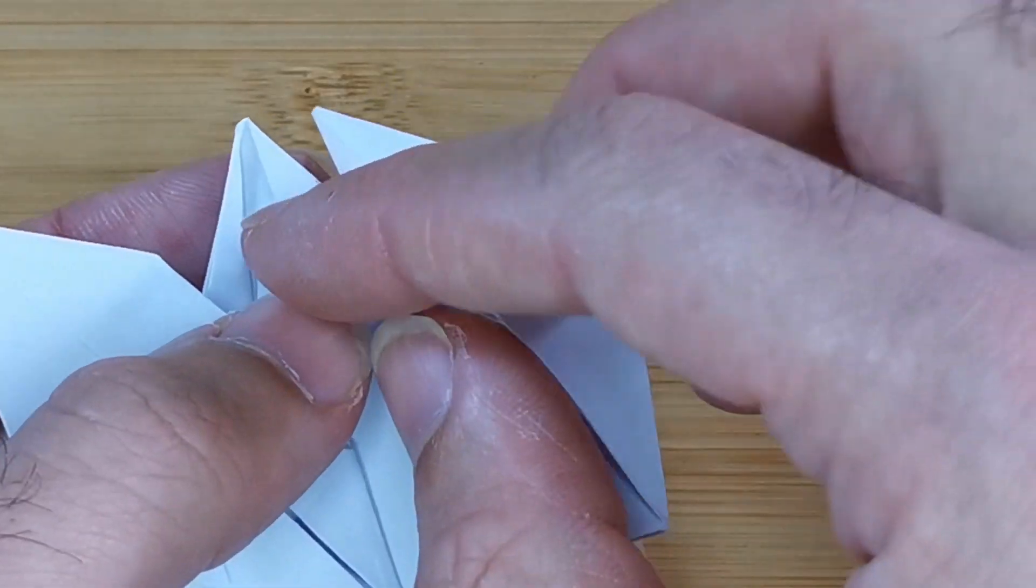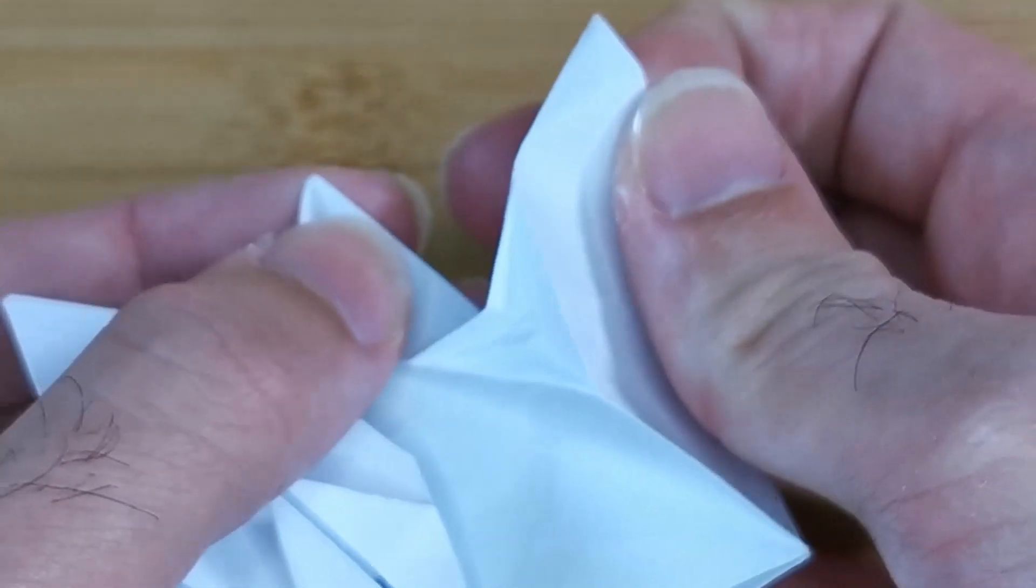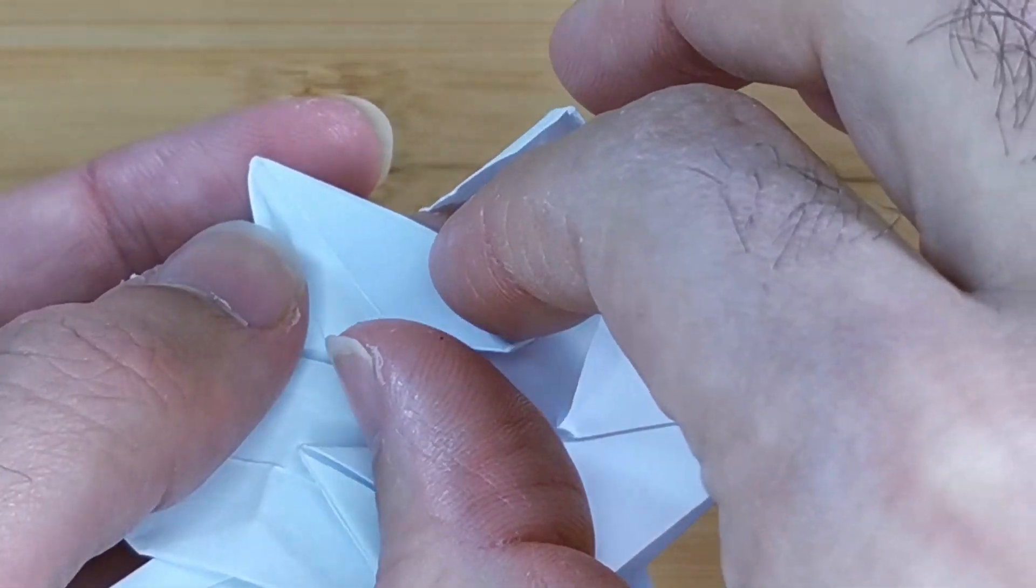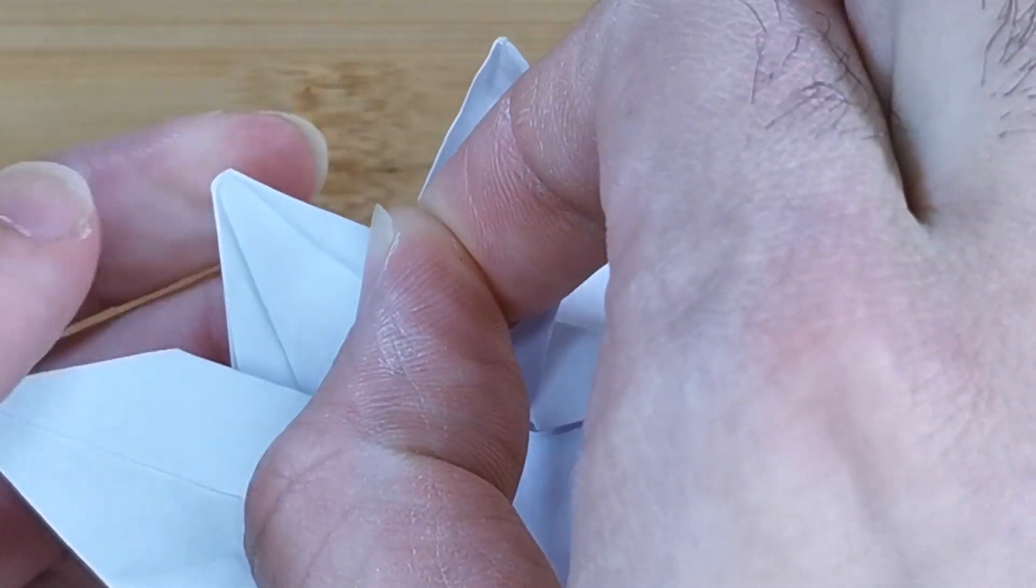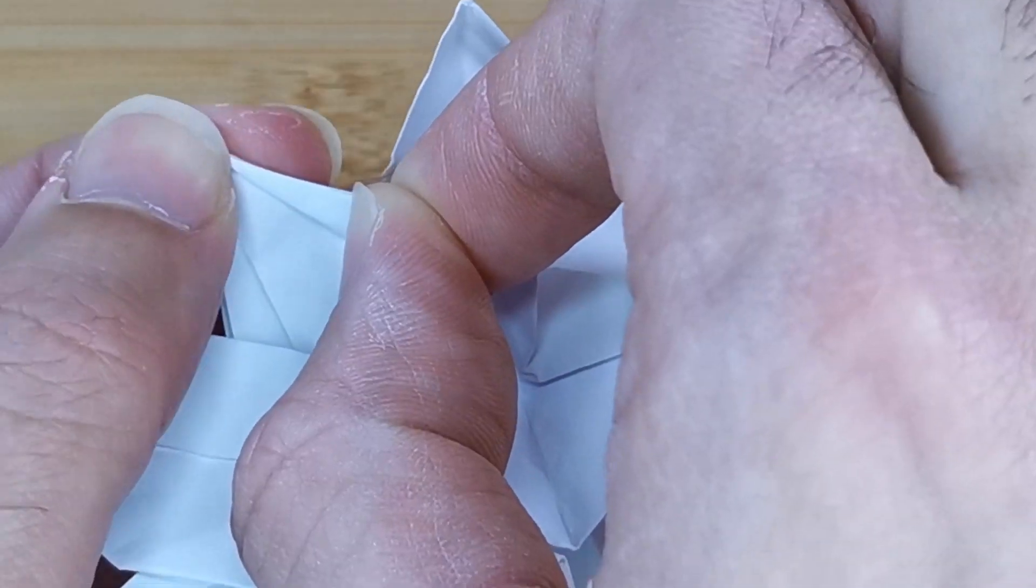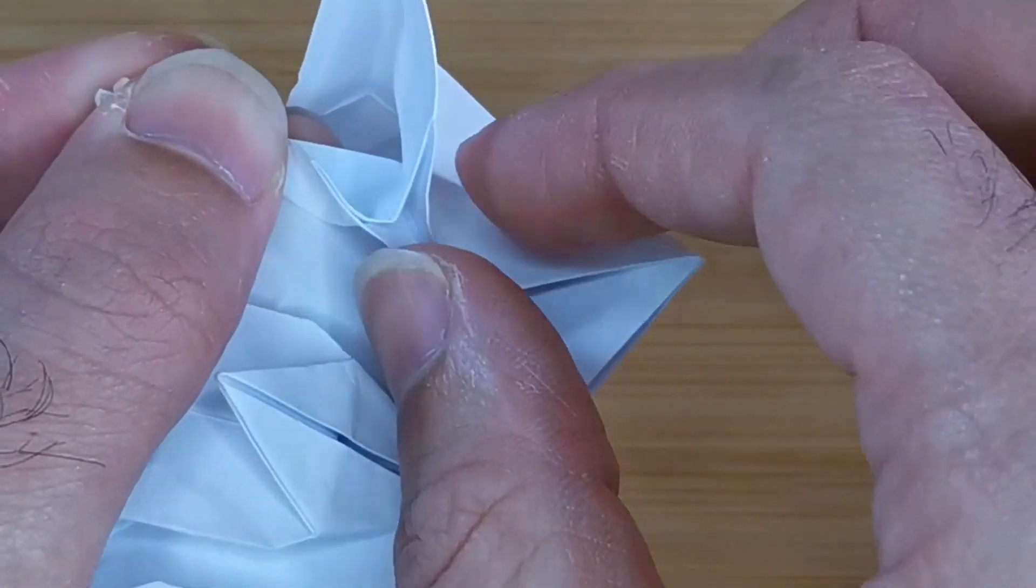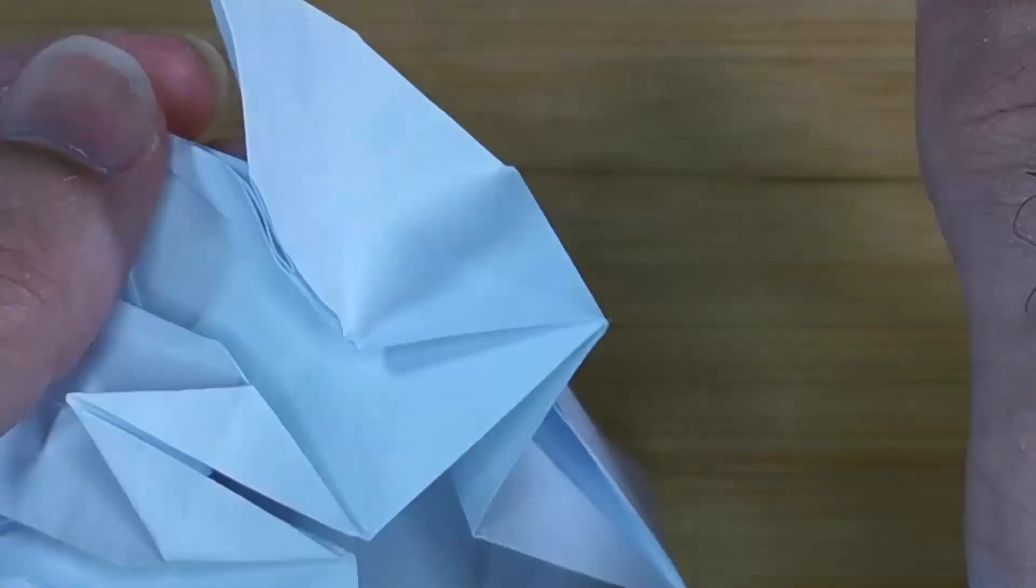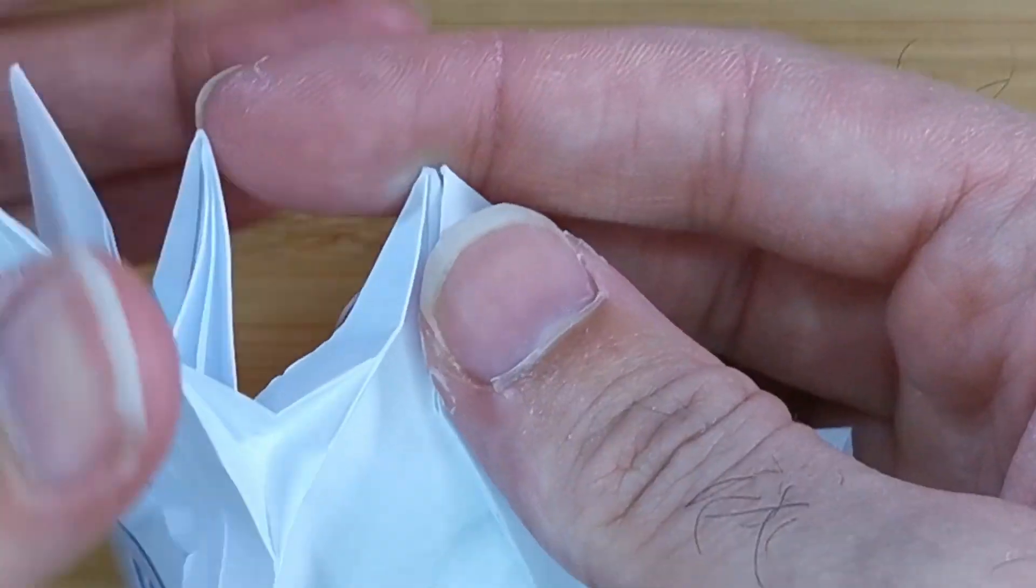We're going to make sure that this flap isn't sticking up and then we're going to bisect it by bringing edge to edge. And repeat on the opposite side.